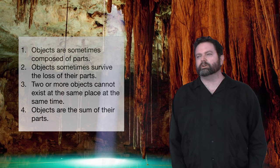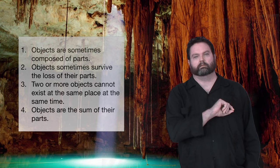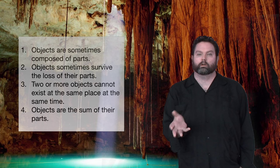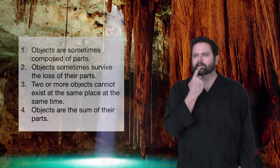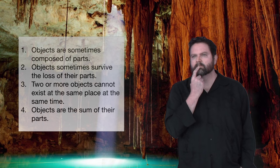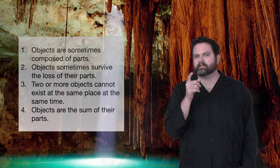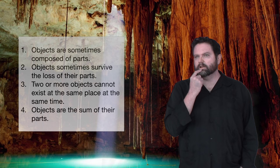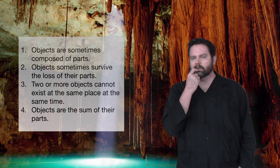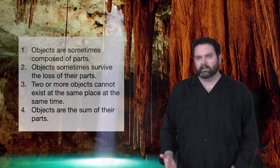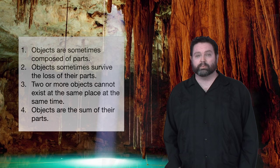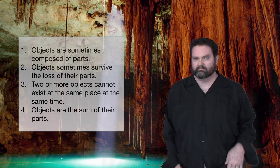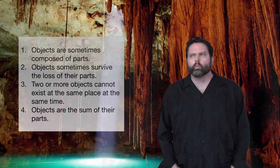Well, suppose you take it another way. Suppose you say, well, of course Tibbles survived because Tibbles is not his tail. Now you don't want to quite reject four. You just want to say, well, Tibbles is not his tail. Well, then what is Tibbles? Because it sure seemed like the tail was a part of Tibbles. Do you start taking away parts? Well then, what are you doing? You take away the legs and you say, well, no Tibbles can survive without legs. You take away the ears and you say, well, Tibbles can survive without ears. It's getting kind of gruesome at this point. But the question remains, well, where is Tibbles? What is Tibbles?